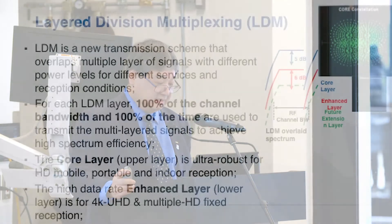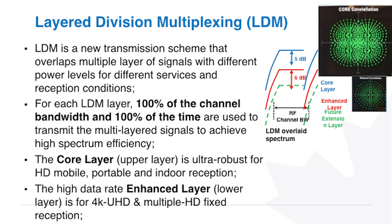This is another technology developed in Canada called layer division multiplexing. What we do is pile up the signal, mix it together, and transmit it. We have two layers of signal: the top layer will be for mobile service, and the red one will be for high data rate fixed service. So we have a combined constellation that looks like a mess. On the receiving end, we use signal processing to separate the signals and make them clear.